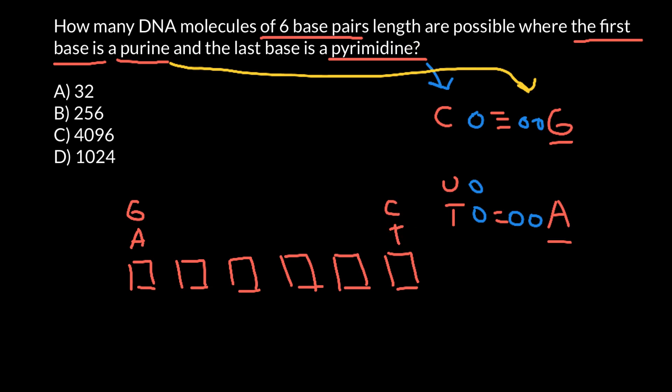We know that pyrimidine in DNA can be only cytosine or thymine. But what we can get, for example, for the second position here, we actually can get any base. It can be adenine, guanine, cytosine, and thymine. Any base.